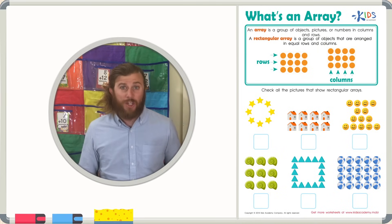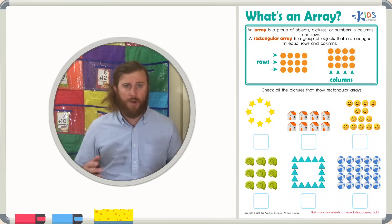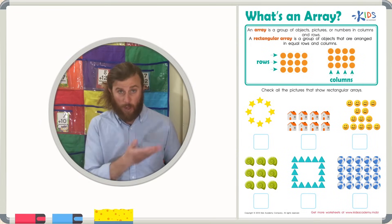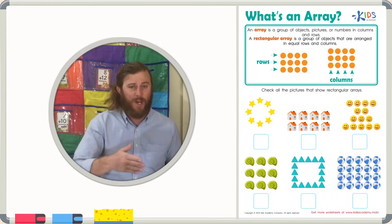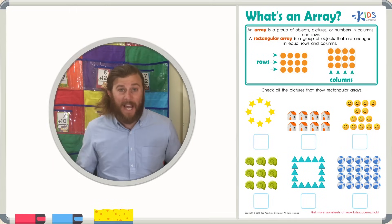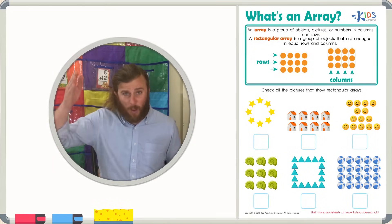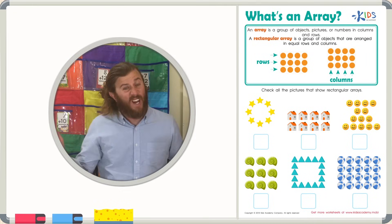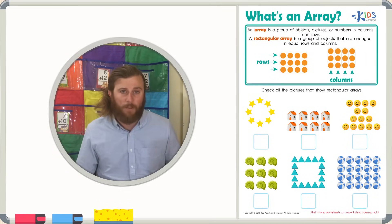An array is just a group of objects, pictures, and numbers that are arranged in rows and in columns. And a rectangular array is an array that is arranged in equal columns and rows, and it also takes the shape of a rectangle.